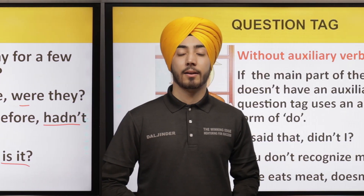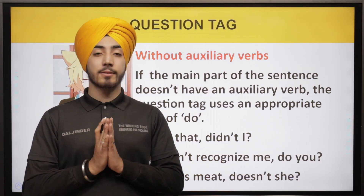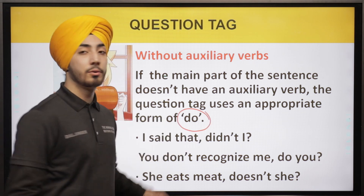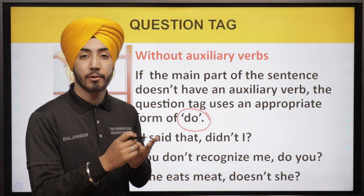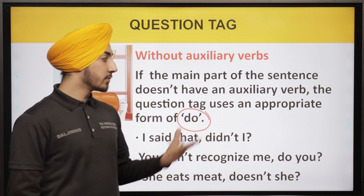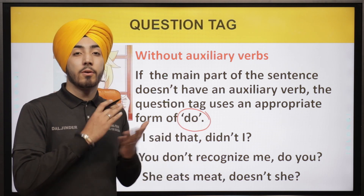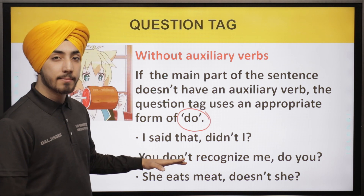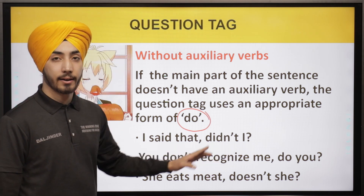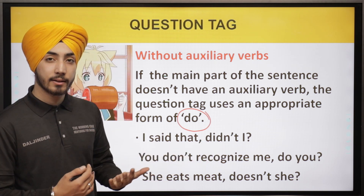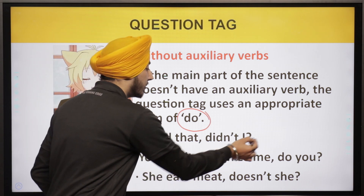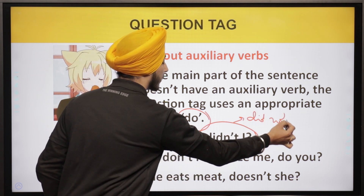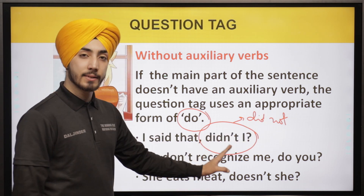Now, if there is no auxiliary verb in the sentence, we use the appropriate form of 'do' — that is 'do', 'does', or 'did' — to form the question tag. For example: 'I said that, didn't I?' — 'didn't' is formed from 'did not', and we take out the 'o' and put an apostrophe. Another example: 'You don't recognize me, do you?' — the sentence is negative, so the question tag 'do you' is positive.